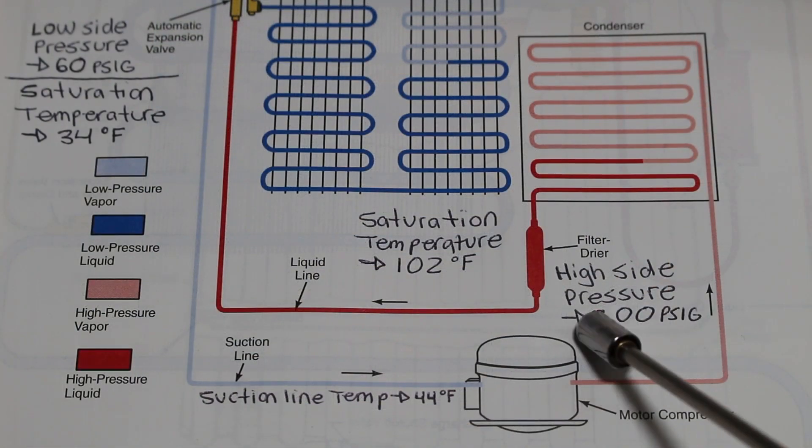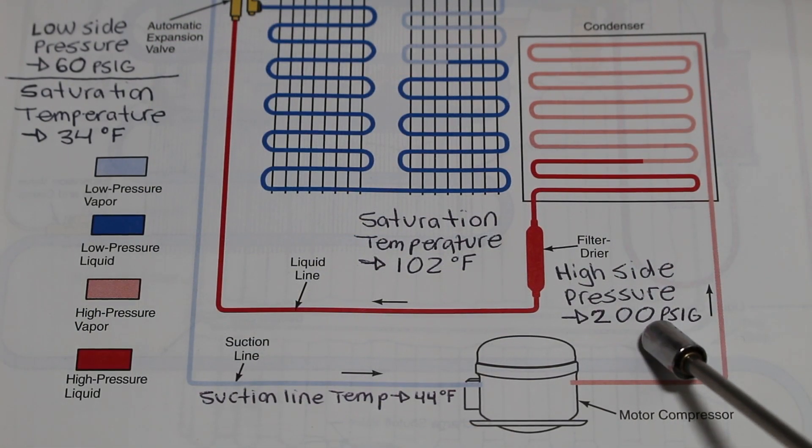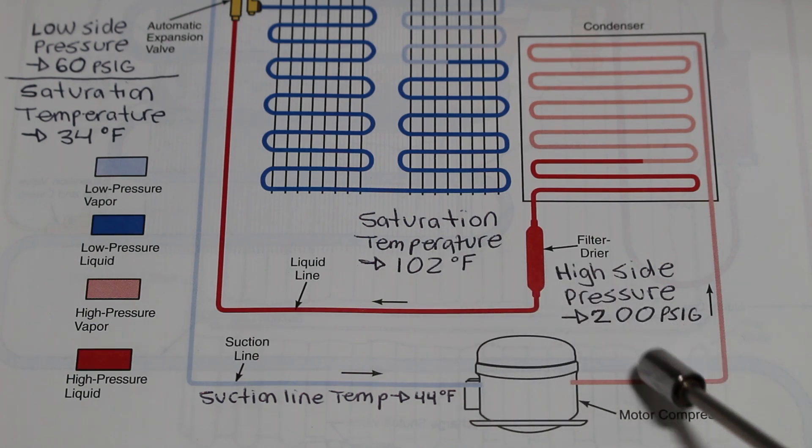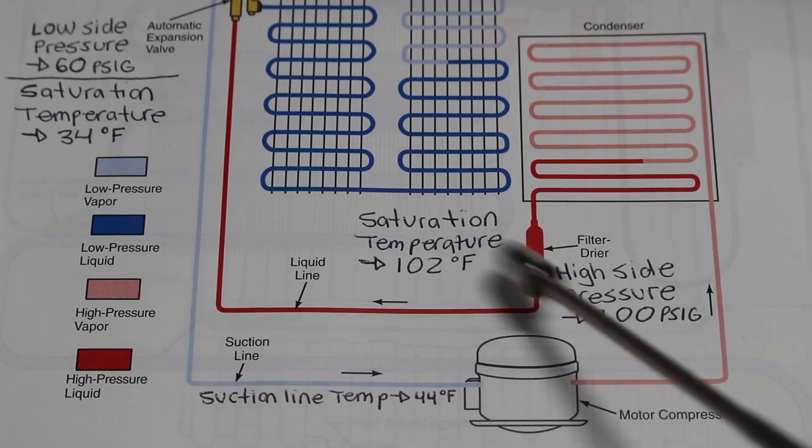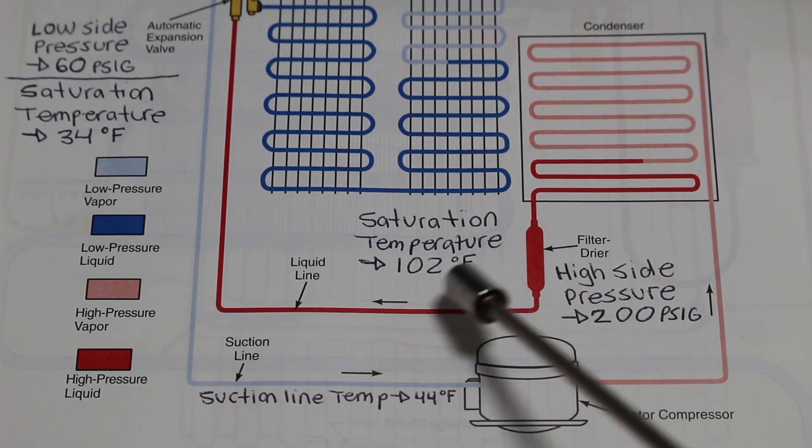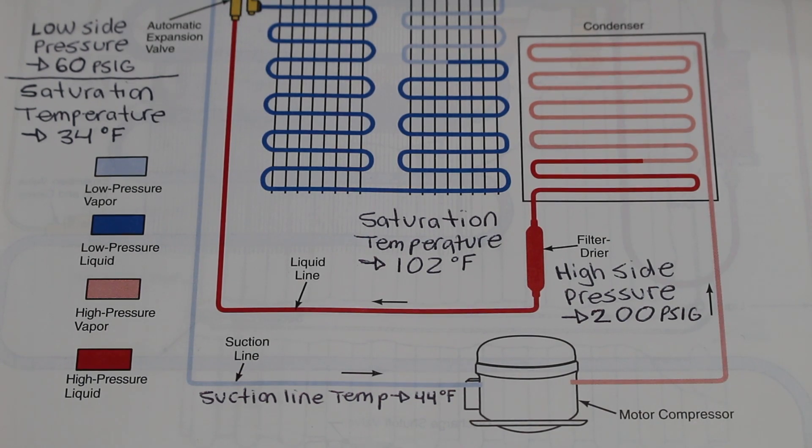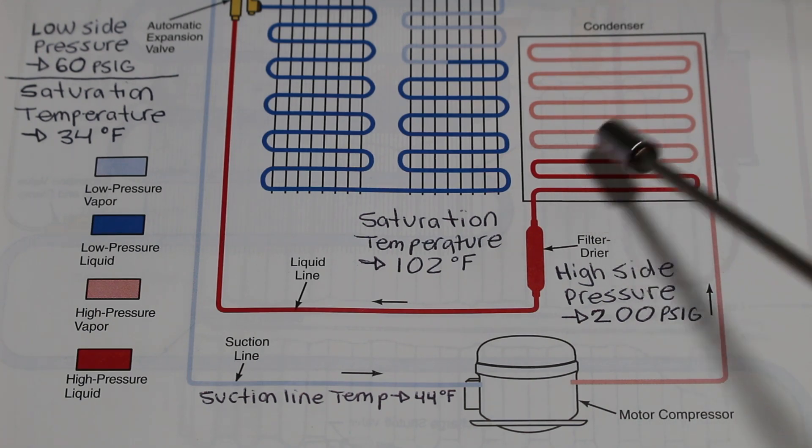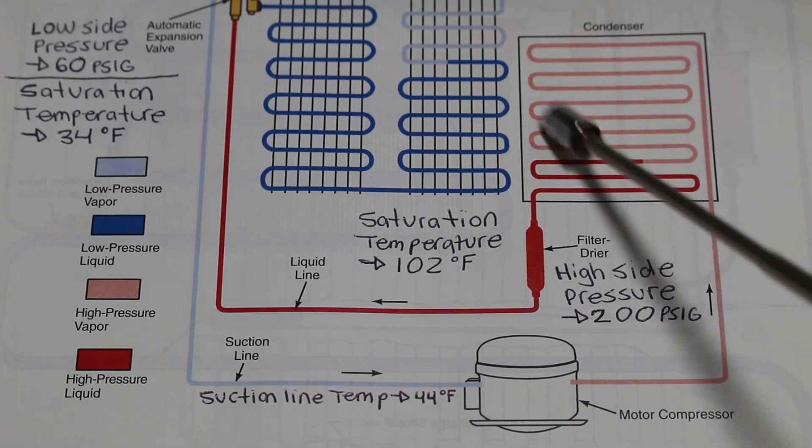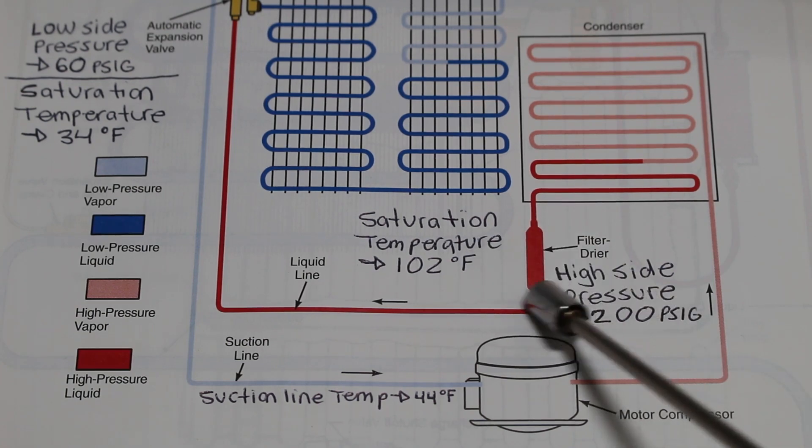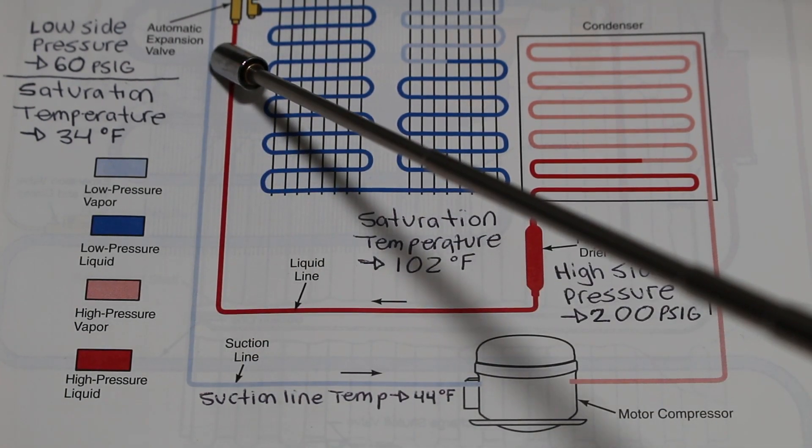So, 200 PSIG is our head pressure for the high side, and we converted that using our PT chart to find our saturation temperature, or our condensing temperature, and that is 102 degrees. Next, we can take our pipe clamp thermometer and take the temperature reading of our liquid line. And our liquid line is the pipe exiting the condenser and entering our metering device.